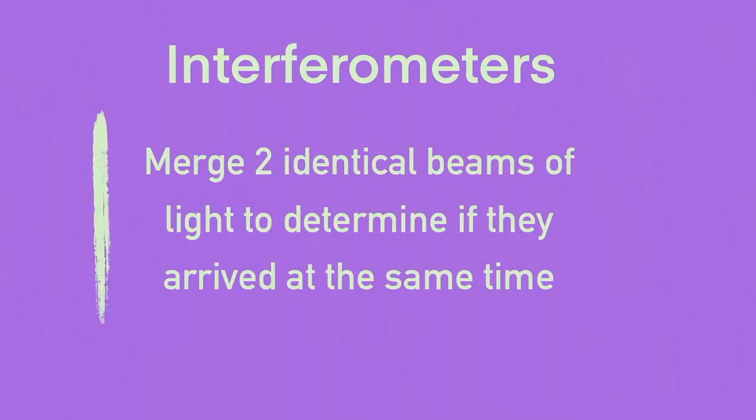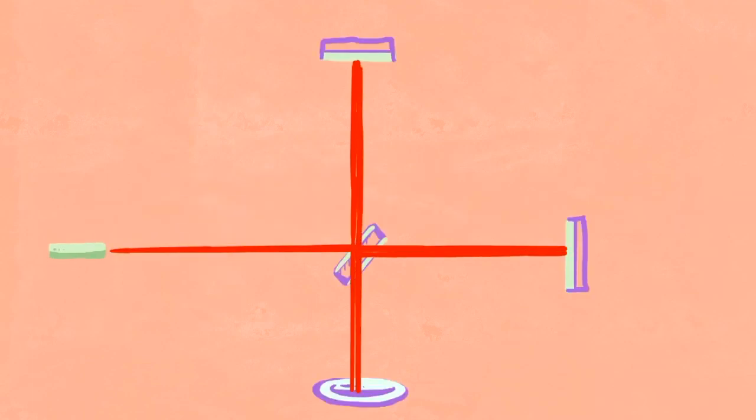Interferometers are devices that merge two beams of light to compare if the light arrives at the same time. Basically, you take a laser and shoot light of a single wavelength at a semi-transparent mirror. This mirror lets half the light pass through and the other half reflect. Then the two beams get re-reflected back to the semi-transparent mirror again, where they reach a detector.